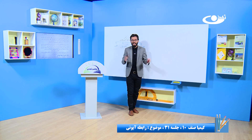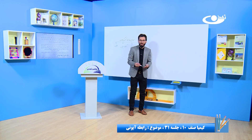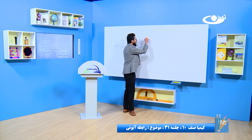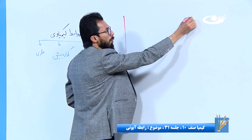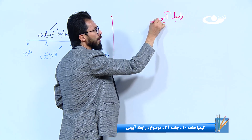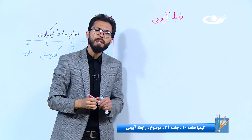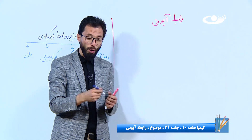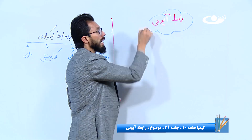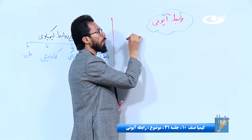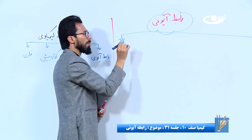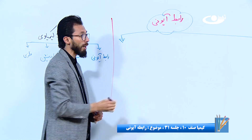ما اینجا موضوعات را مرتب می‌نویسیم چون در کتاب یک ذره پراکنده گفته شده. گپ ما و شما رابطه آیونی است. شما چند تا موضوع باید در رابطه آیونی یاد داشته باشین که اگر پرسان شود بتوانید جواب بدید.